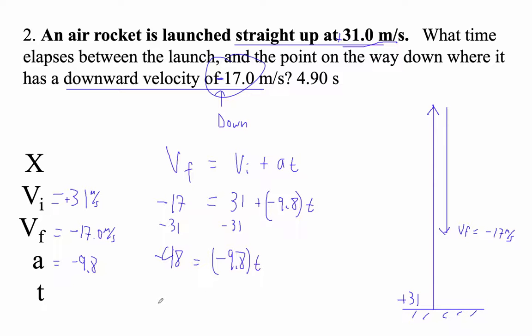And I get that 4.897959 is my time. Now, you have three digits, so I need to round that place. So I would say that t is 4.90 seconds. Not negative, but just 4.90 seconds.